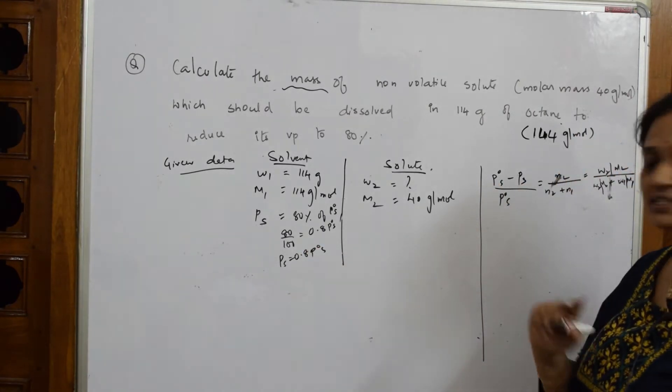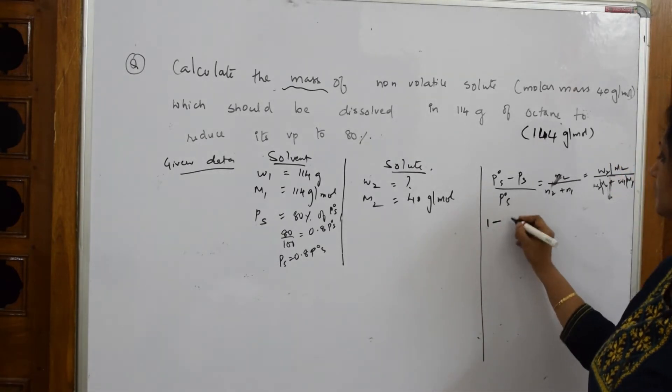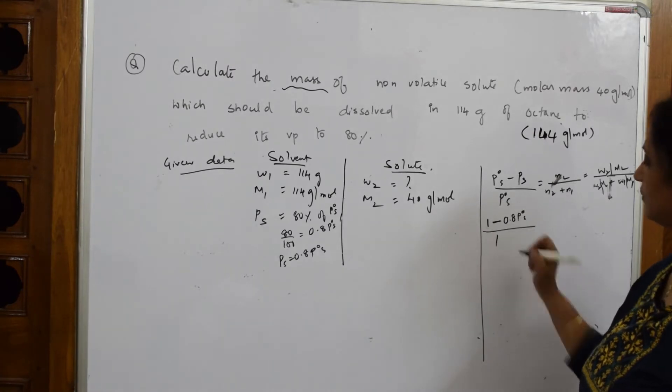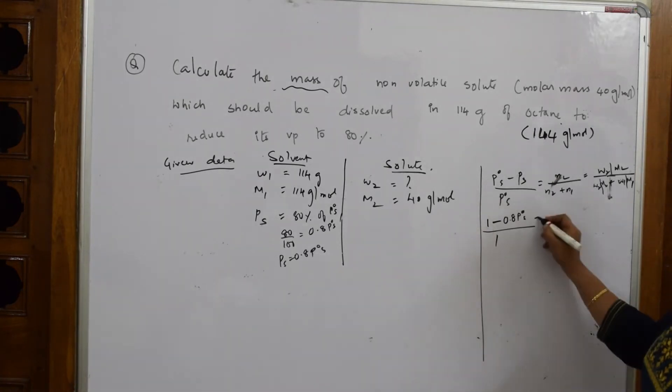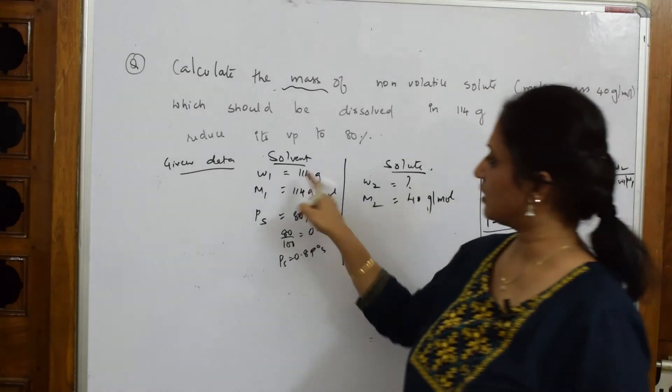p0s is 1, so (1 - 0.8 p0s)/1 = (w2/40)/(w2/40 + 114/114).